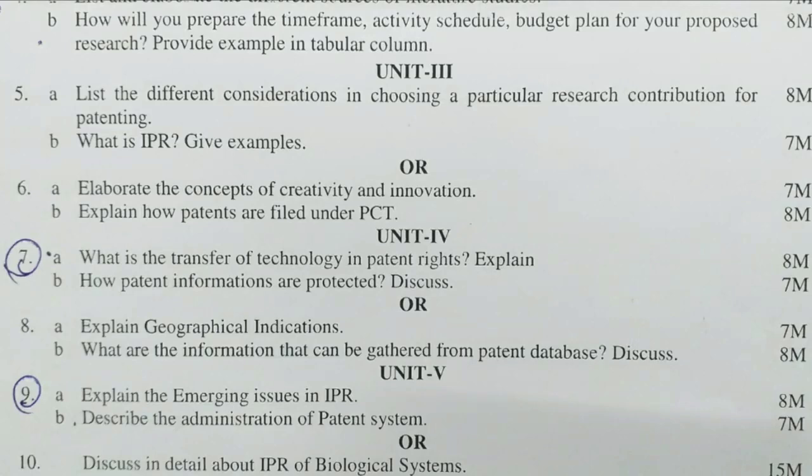Unit 3 — Fifth question A bit: List the different considerations in choosing a particular research contribution for patenting (8 marks). B bit: What is IPR? Give examples (7 marks). Sixth question A bit: Elaborate the concepts of creativity and innovation (7 marks). B bit: Explain how patents are filed under PCT (8 marks).